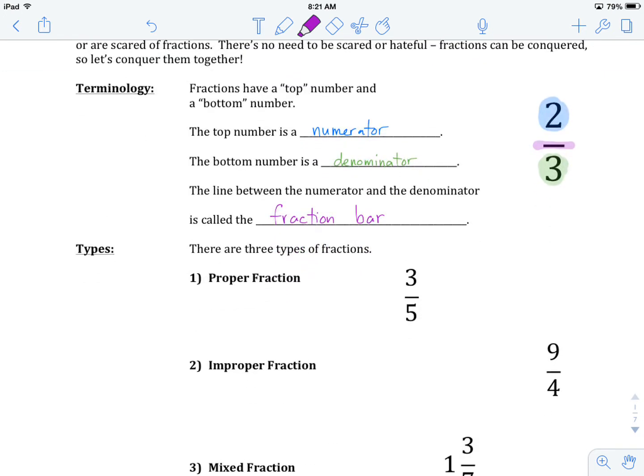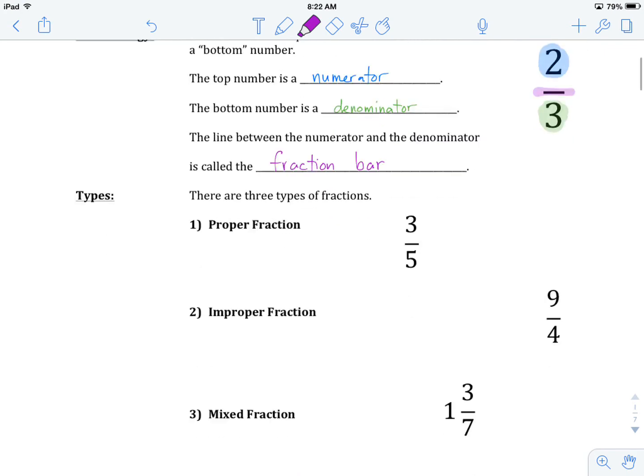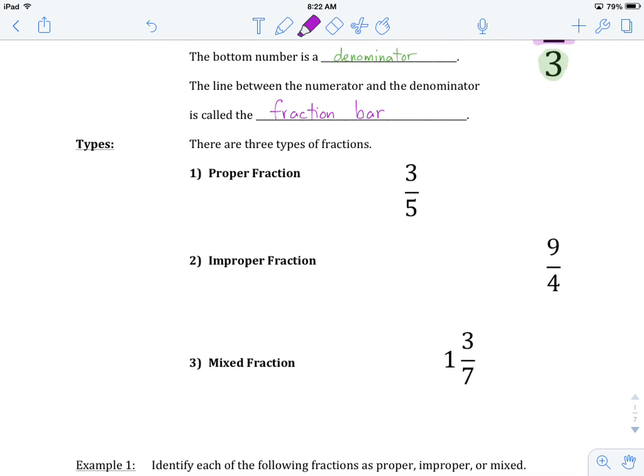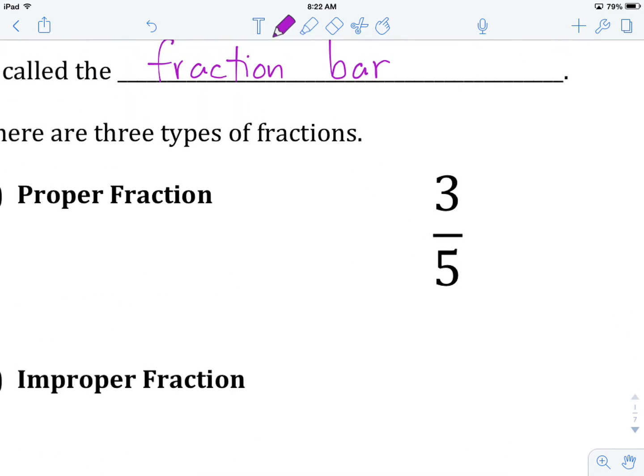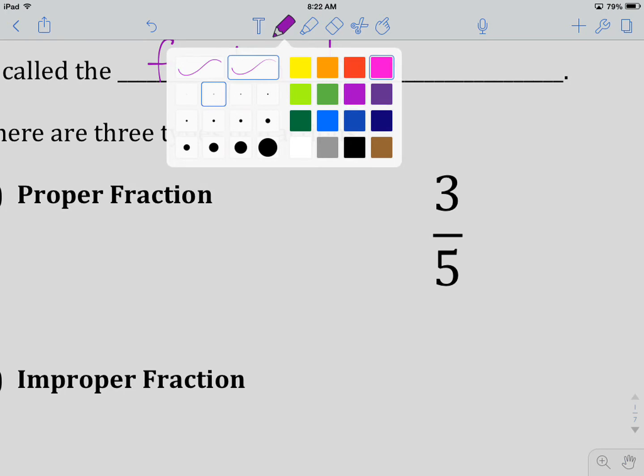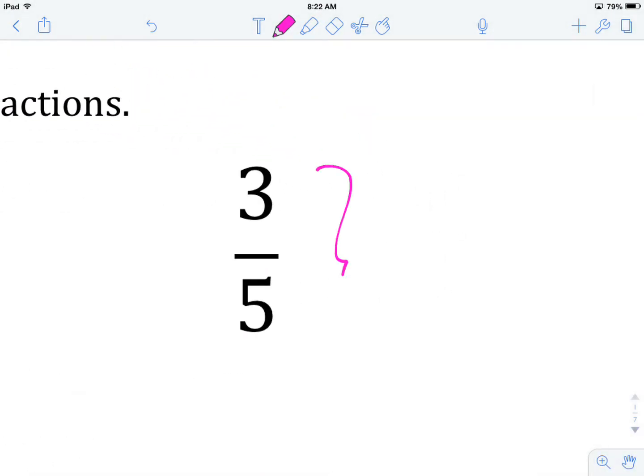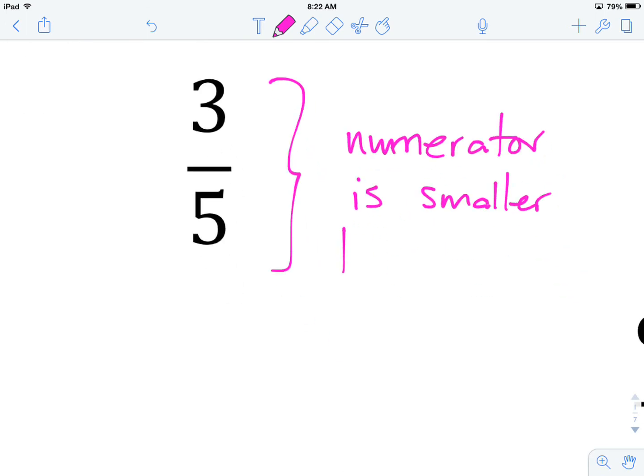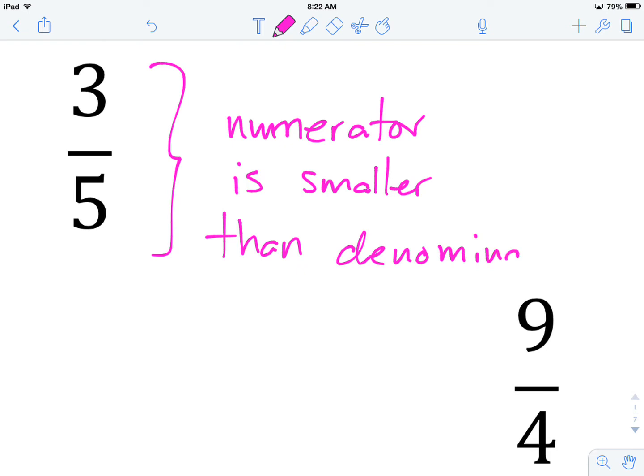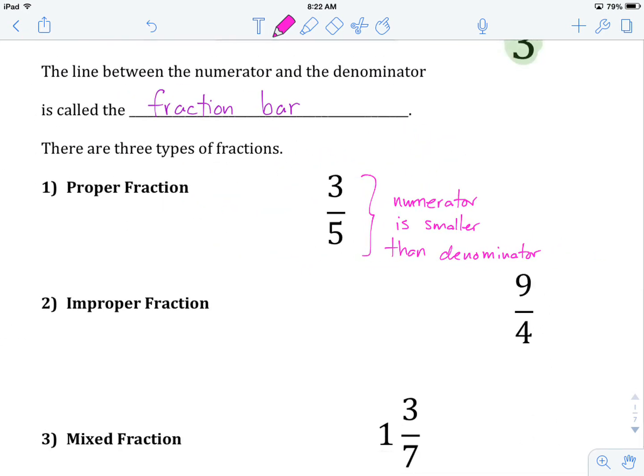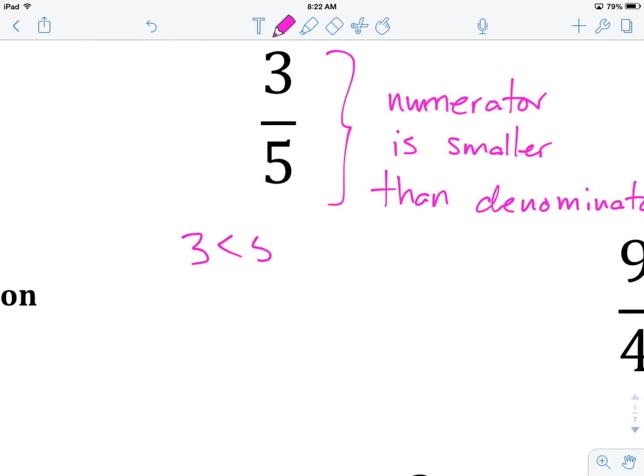Now let's look at the different types of fractions that we have. You'll notice we've got three listed here: proper fraction, improper fraction, and mixed fraction. Each one has a characteristic that helps us identify them. Let's start with proper fraction. When we are given a proper fraction, the numerator is smaller than the denominator. And we can see here that three is smaller than five, so this is true.